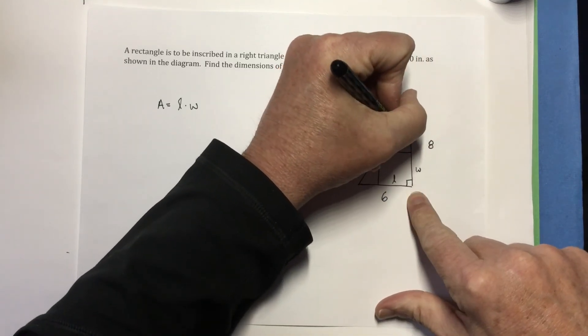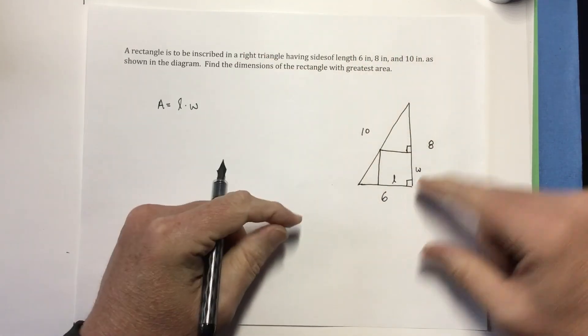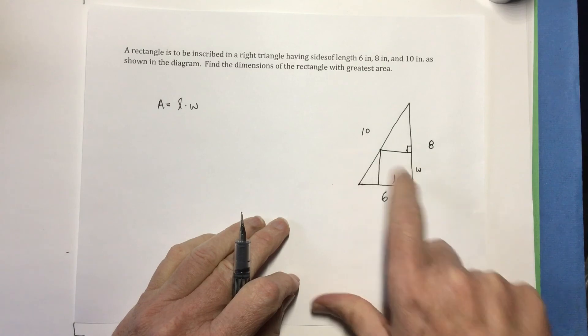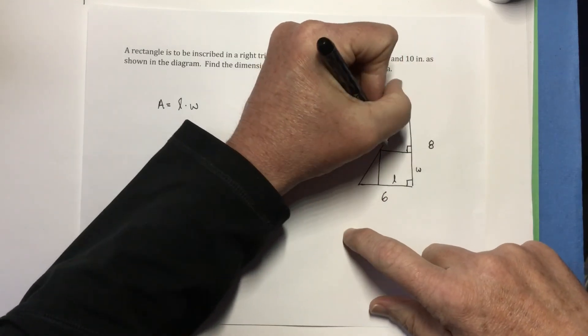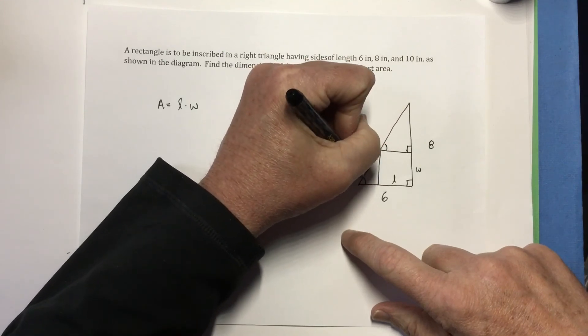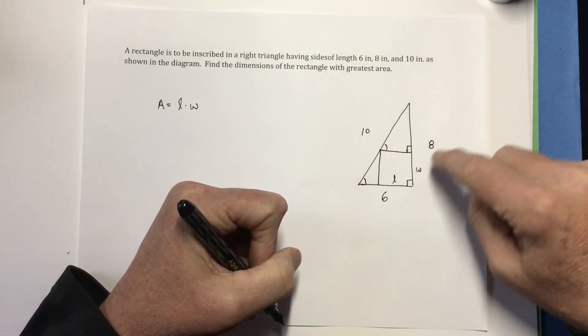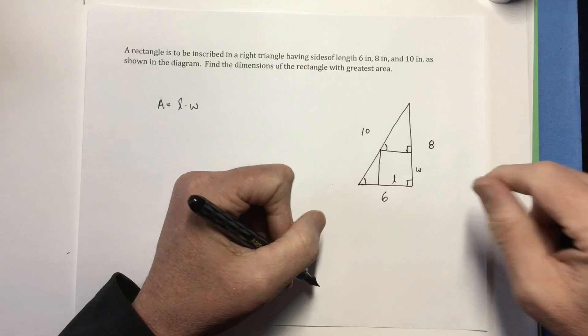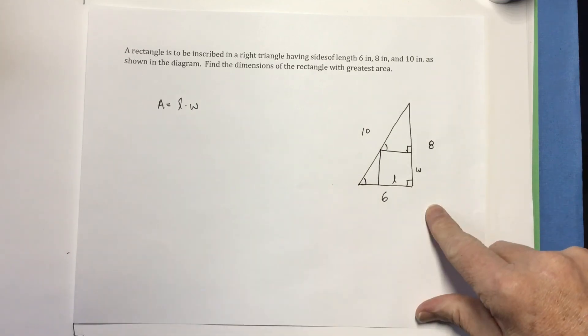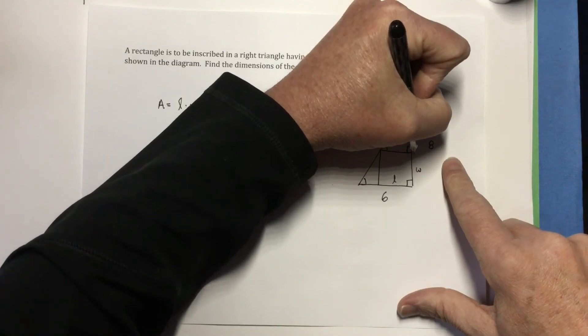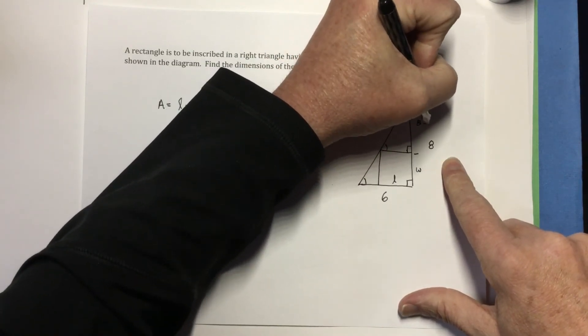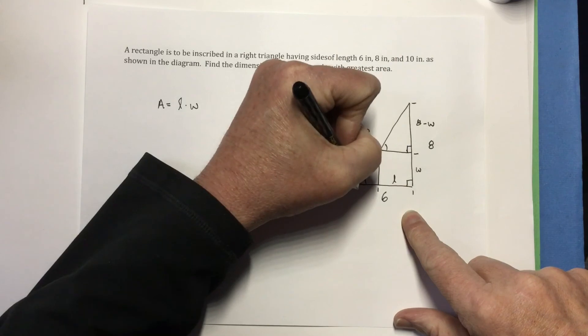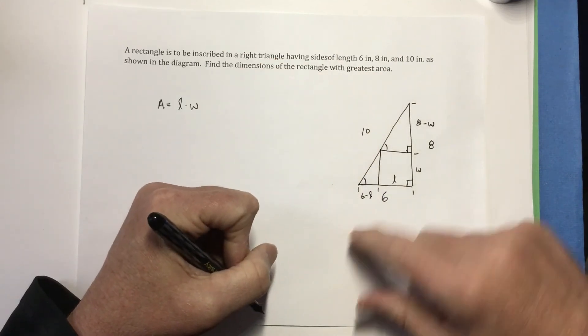Well, this is a right triangle as well. And if we look at this as two parallel lines there and there, cut by transversal, that means that this angle is congruent to that angle, which means that these triangles are similar. So I've got these three triangles are all similar to each other. So let's see here. That's 8 and that's W. That means this distance here is 8 minus W. And that means this is L. So that means this distance here is 6 minus L. And that's 10.